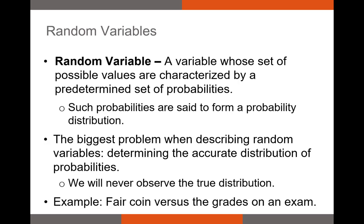Since we're going to define a return as a random variable, let's first define what a random variable is. A random variable is a variable whose set of possible values are characterized by a predetermined set of probabilities. Such probabilities are said to form what we call a probability distribution, and we can analyze that probability distribution and use it to make assumptions about future values of the random variable.